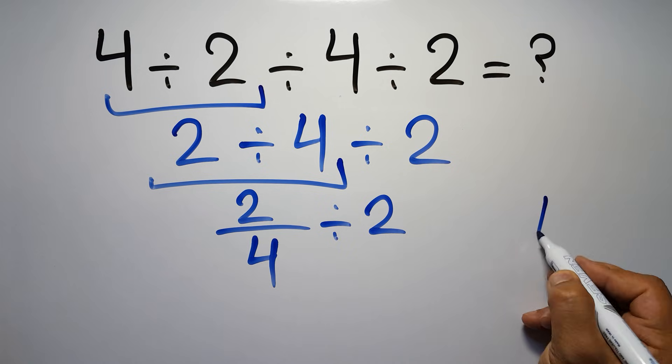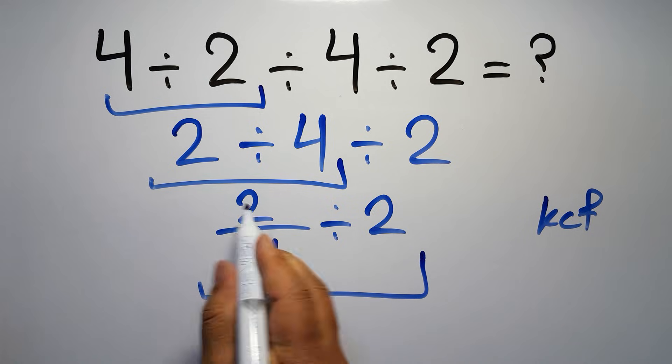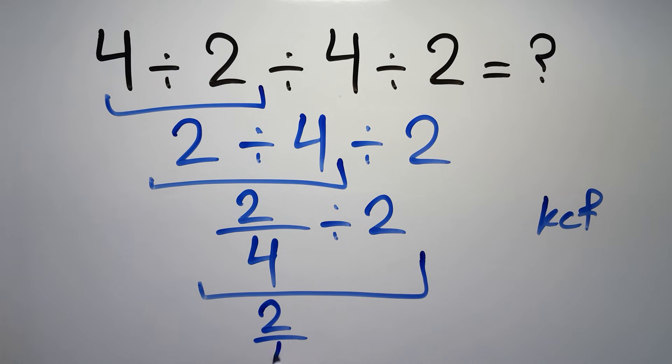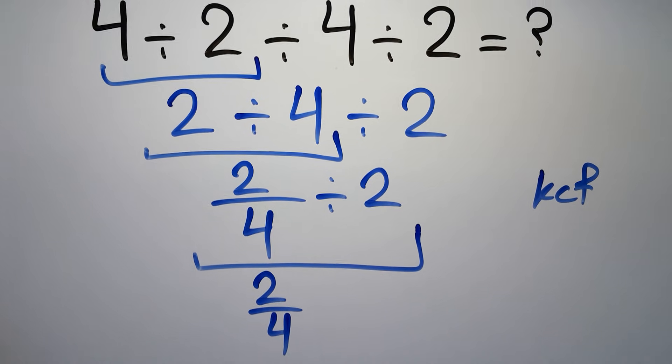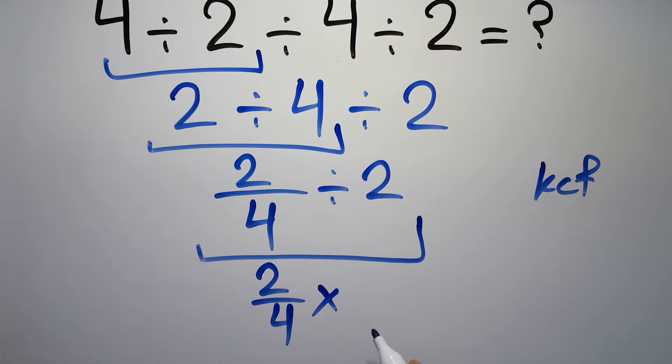According to the KCF rule, K stands for keep, C stands for change, and F stands for flip. We can write: keep the first fraction, change division to multiplication, and flip the second fraction.